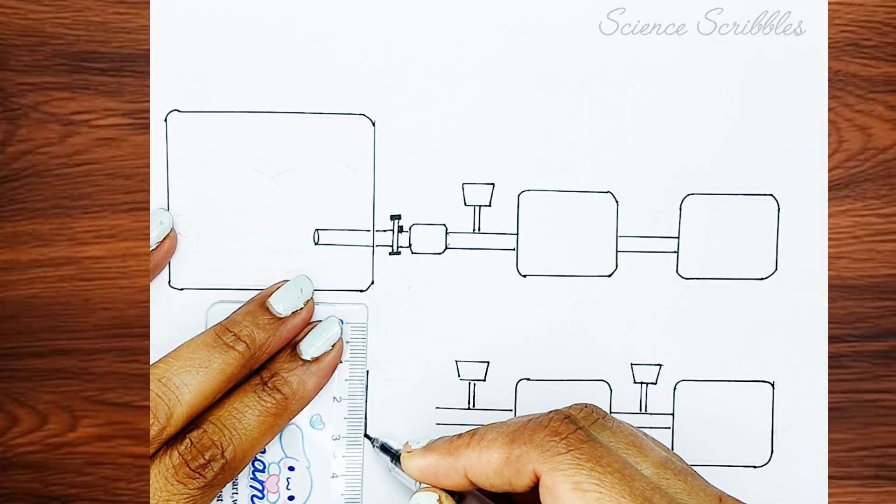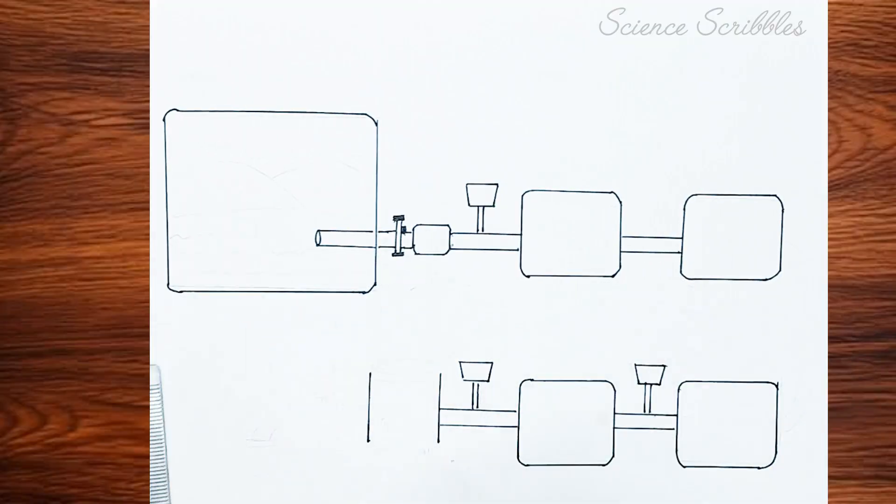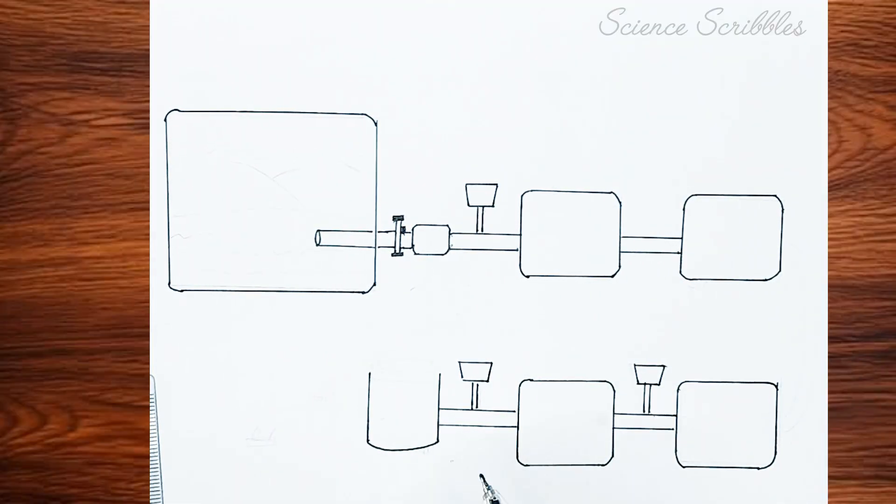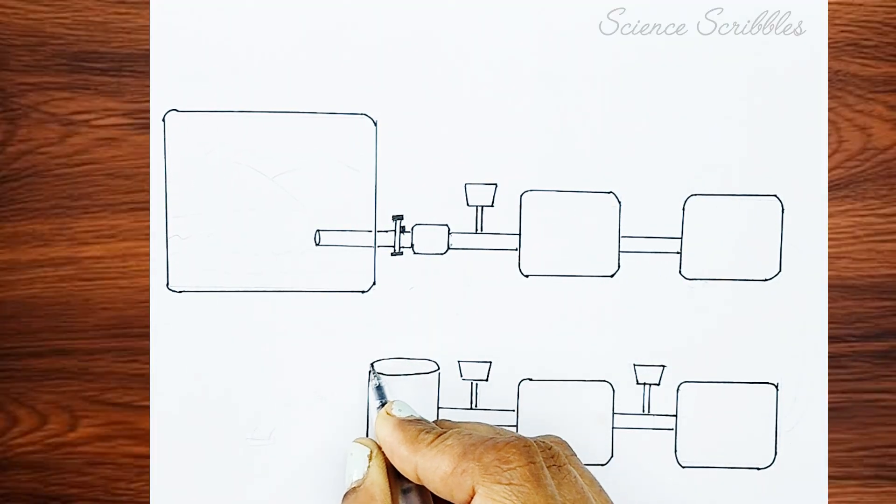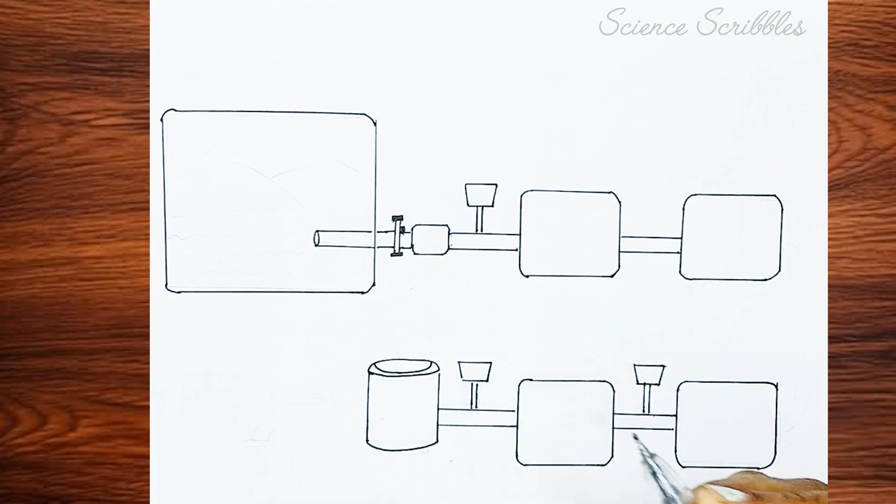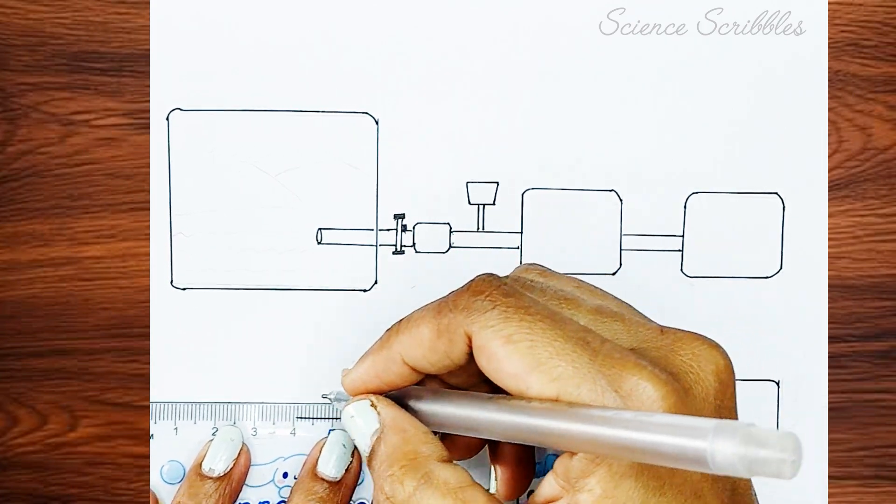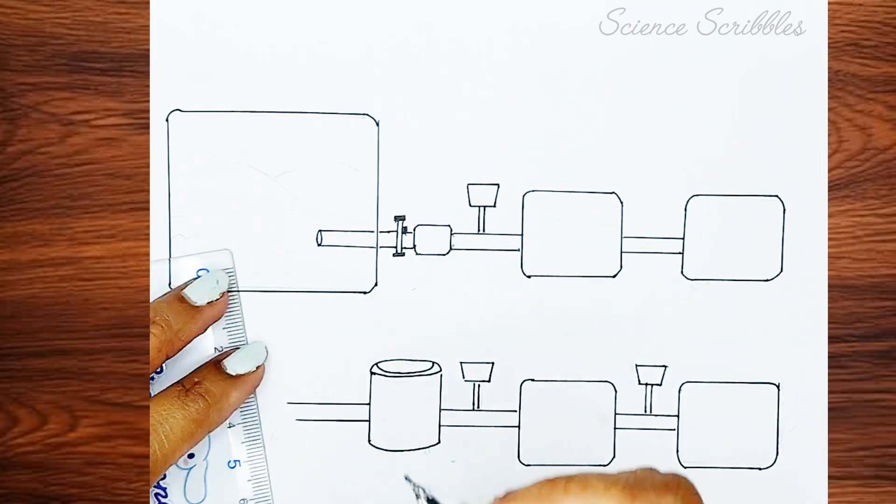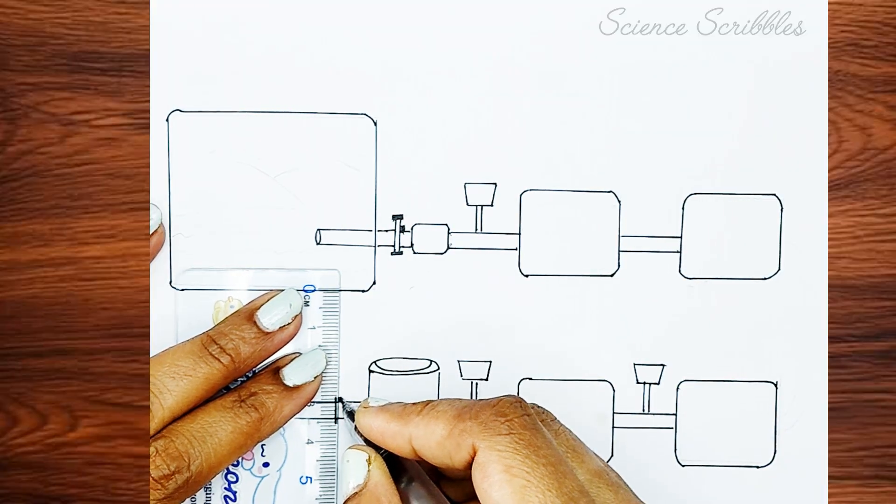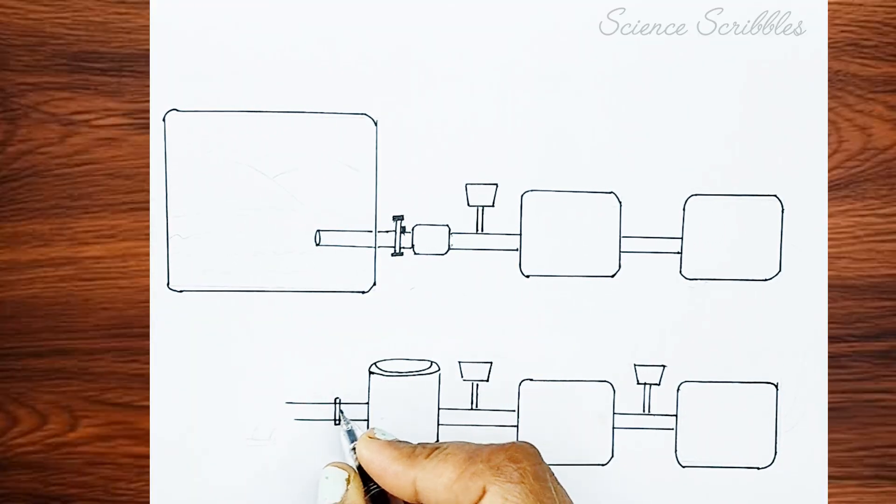Now, we will add the storage unit, where the cleaned water is collected. This storage unit is a large tank with a high water-holding capacity. Finally, we will complete the diagram by drawing a curved pipeline leading to a tap. This represents the final stage, where the treated water is distributed to the community.